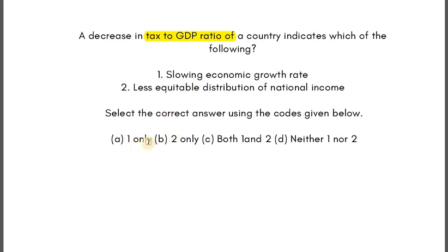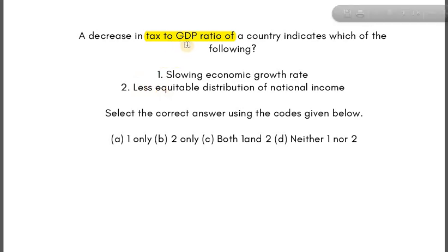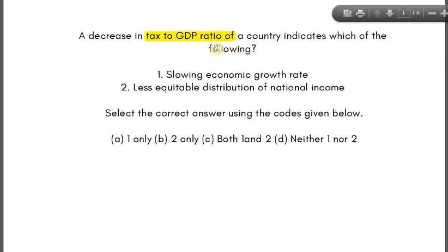The official answer turned out to be one only — there was a lot of confusion about this in test series and coaching institutes. Let's get to the explanation. In a crude sense, tax to GDP ratio means tax revenue, so the question is asking: what can be the reason behind a fall in tax revenue?